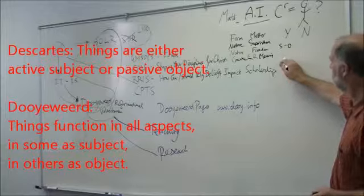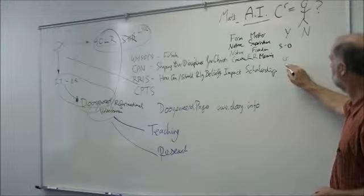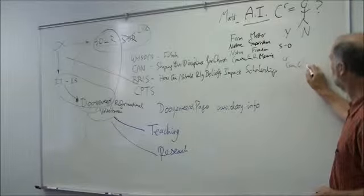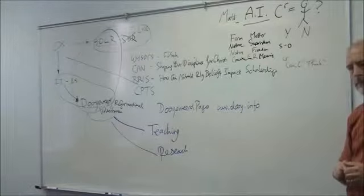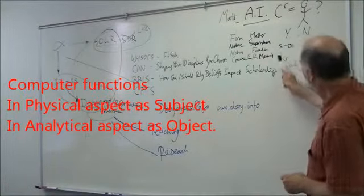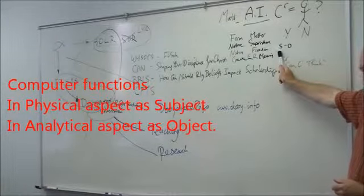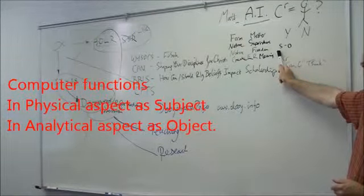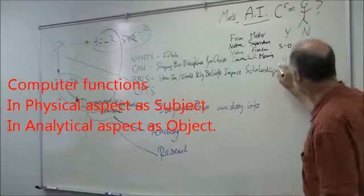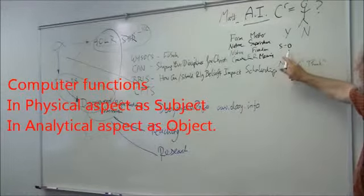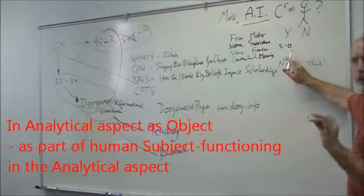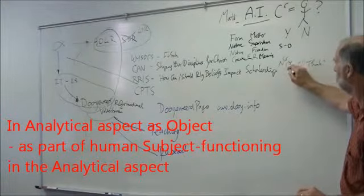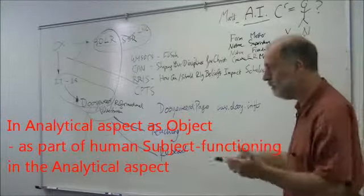So we can see a computer operating and ask the question, for example, can computers think? That is, operate in the analytical aspect. If we take the computer's subject functioning, it functions as subject only up to the physical aspect, and not any further. Therefore, the answer is no. If we take the computer as object, as object within human functioning, within any aspect, then the answer can be yes. The computer can think on behalf of us.